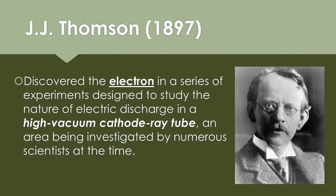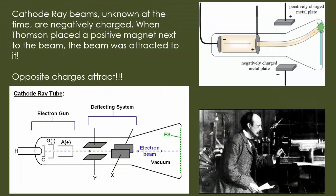In 1897 there's a new scientist named J.J. Thompson, and he discovered the electron in a series of experiments designed to study the nature of electrical discharge in what they call a high vacuum cathode ray tube. The cathode ray beams, which are unknown at the time, are these negatively charged particles, and when Thompson placed a positive magnet next to the beam, the beam was attracted to it. This simply means that opposite charges are going to be attracting to each other, just like magnets.